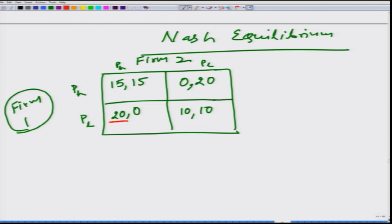Similarly, if firm 1 thinks firm 2 is going to price its product low, what should it do? If firm 1 prices high it gets 0, which is less than 10. So in this case also, firm 1 should price its product low. From this, firm 1 can conclude that no matter what firm 2's pricing strategy is, it is better off pricing its output at the low price, because low always gives the higher profit. Firm 2 would have the same logic and would also prefer to price its product low no matter what firm 1 does.